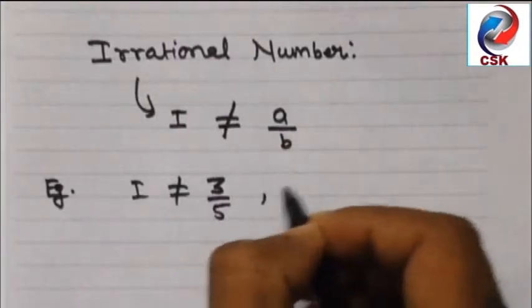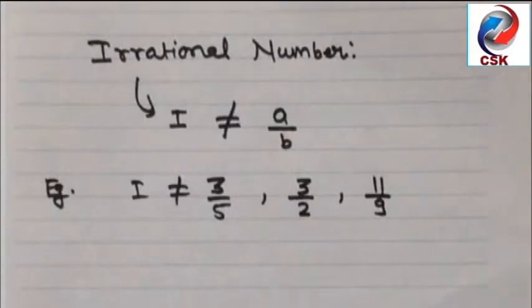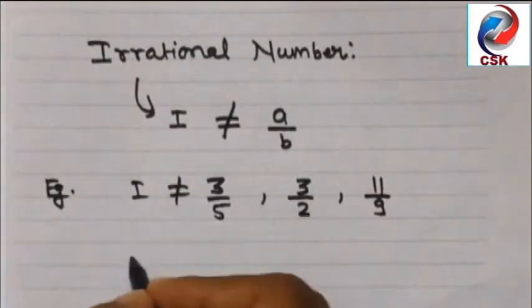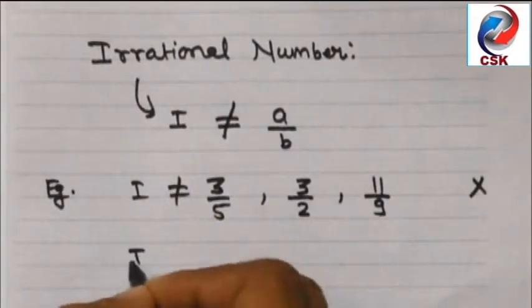My dear students, I'm trying to denote it by i so i cannot be equal to 3 by 5, it cannot be equal to 3 by 2, it cannot be equal to 11 by 9 because this is the form of a by b. So these are not the irrational numbers.